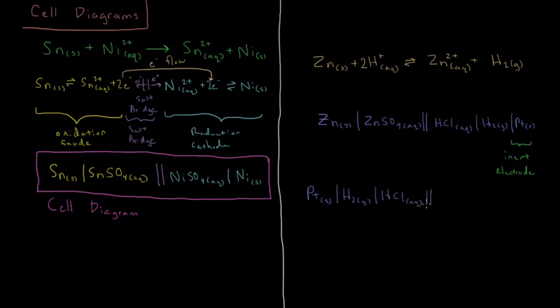So we have H2 gas getting oxidized to HCl, aqueous HCl, going through the salt bridge, and then we would have aqueous zinc sulfate getting reduced to zinc metal.